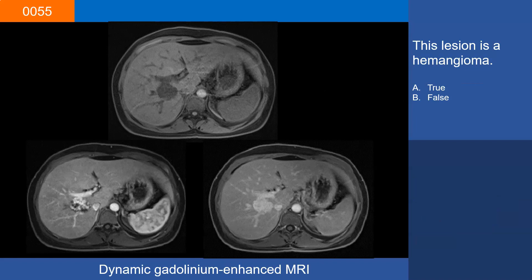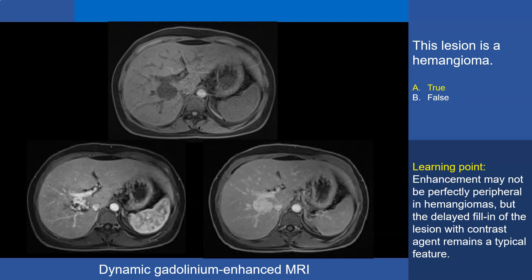Case 55. This lesion is a hemangioma — A, true, or B, false. The correct answer is true. Although the enhancement on the early arterial phase is not typically peripheral, the appearance on the delayed images of near total enhancement of the lesion is typical of hemangioma. The learning point is that enhancement may not be perfectly peripheral in hemangiomas on early dynamic gadolinium-enhanced MRI, but the delayed fill-in of the lesion with contrast agent remains a typical feature.